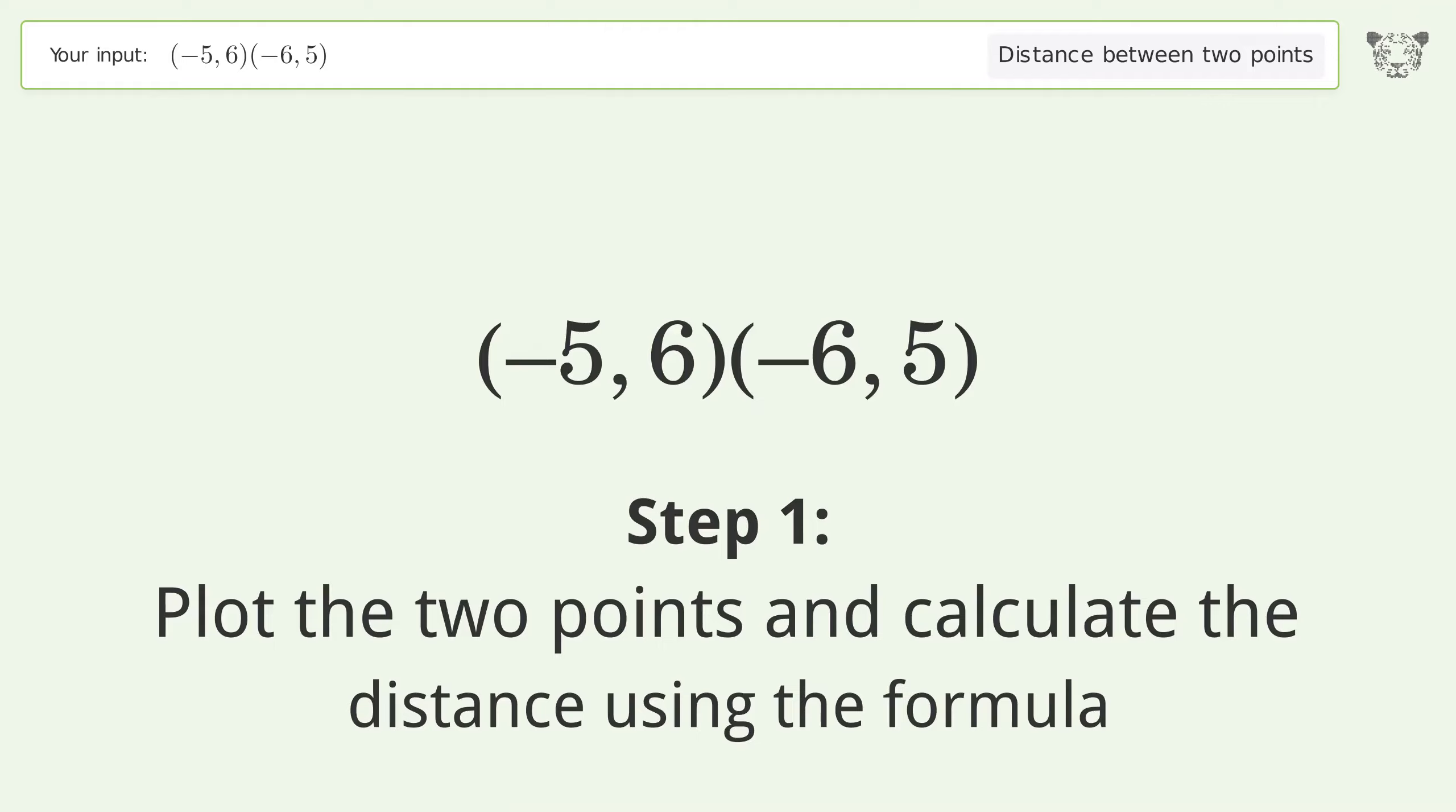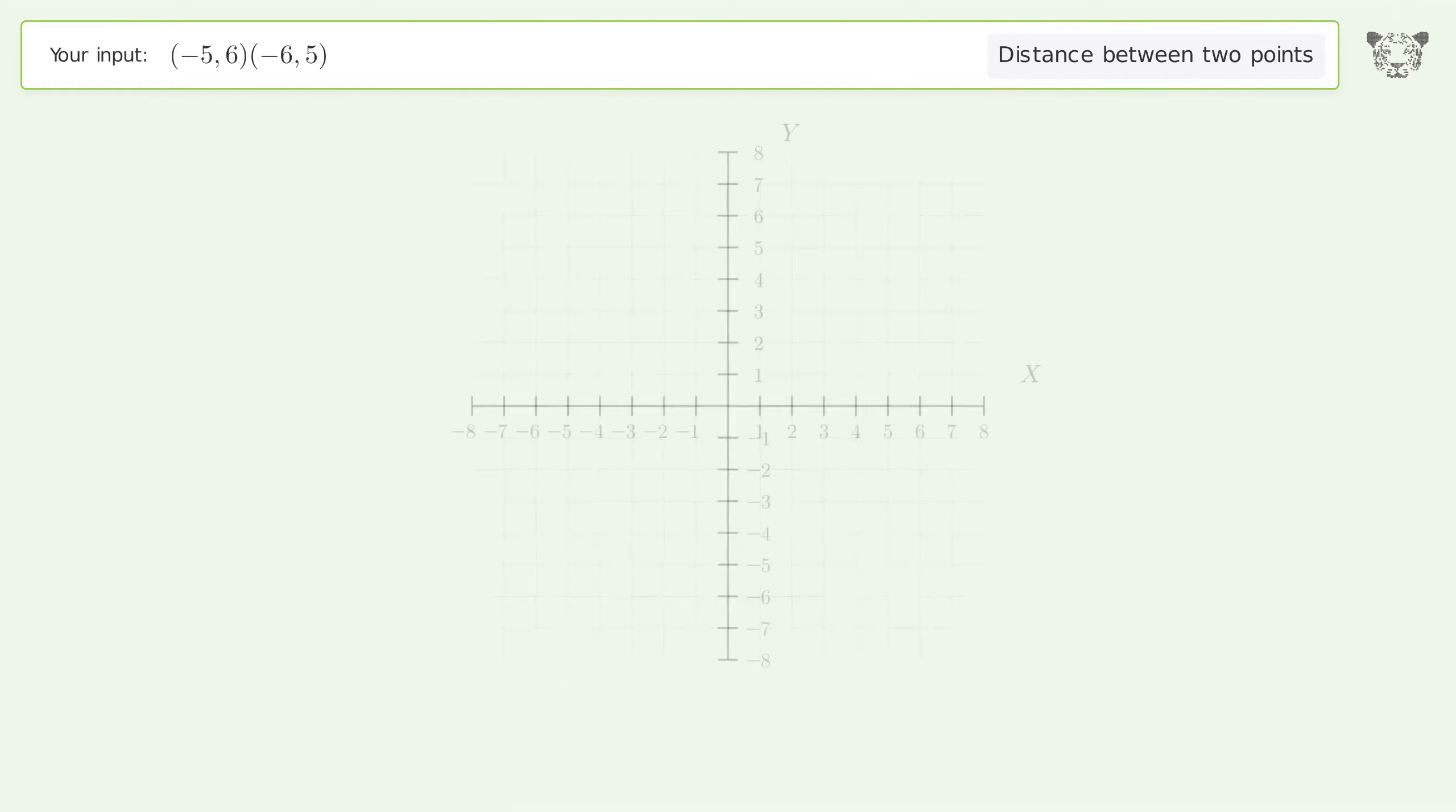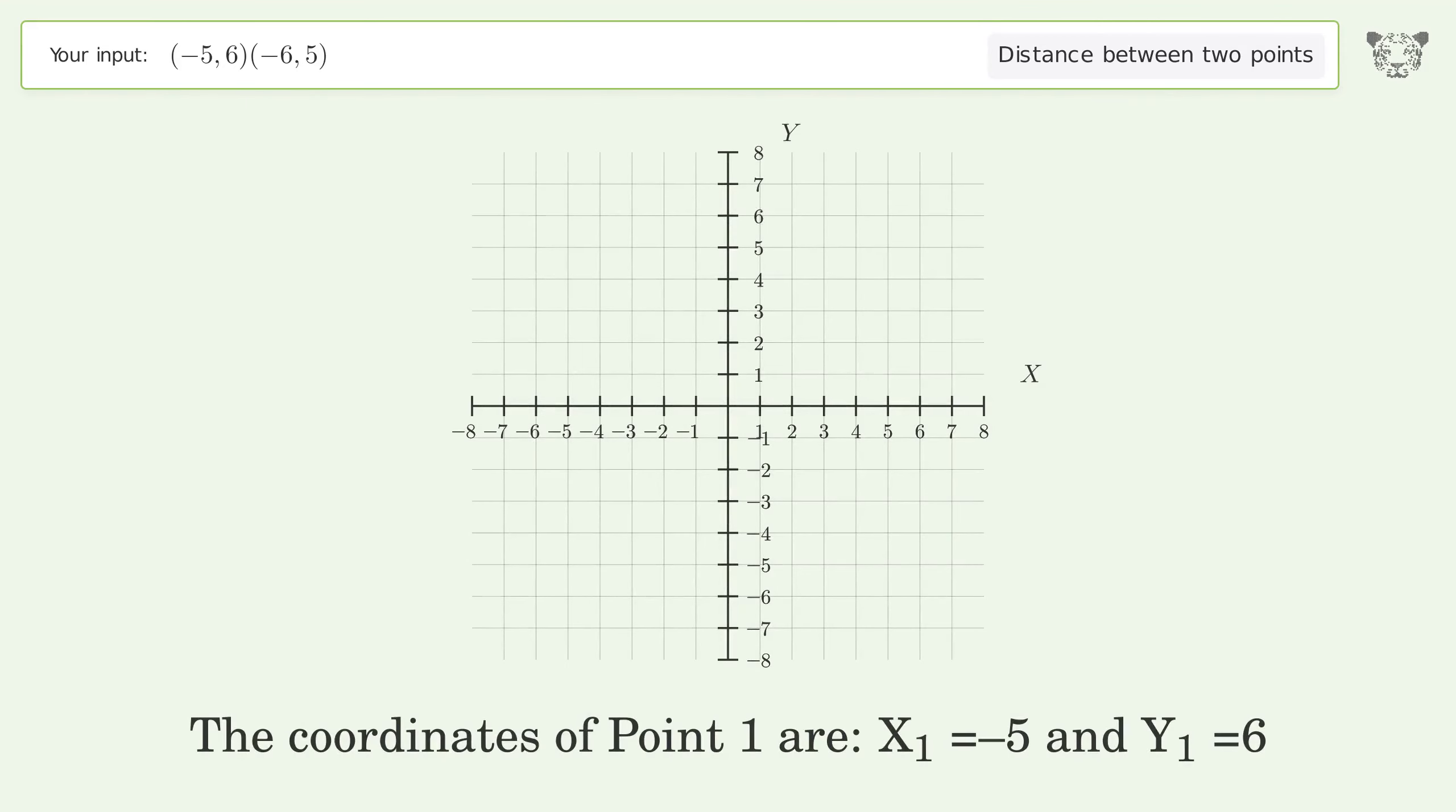The coordinates of point 1 are x1 equals negative 5 and y1 equals 6. The coordinates of point 2 are x2 equals negative 6 and y2 equals 5.